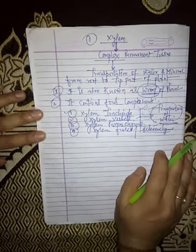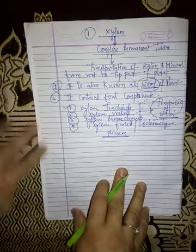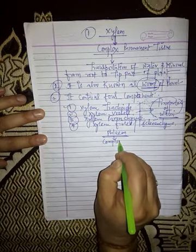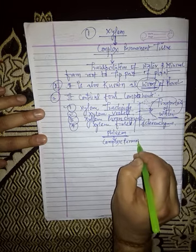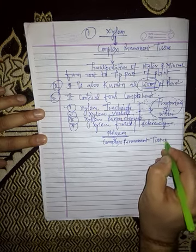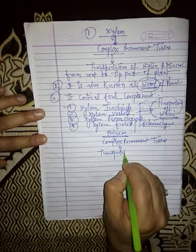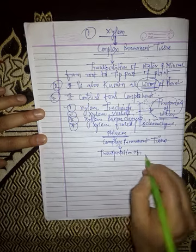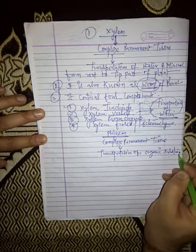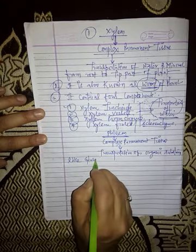Xylem contains four components: xylem tracheids, xylem vessels, xylem parenchyma, and xylem fibers. Today I am explaining about phloem. Phloem is also a type of complex permanent tissue. It also helps in the transportation of organic substances, like glucose.